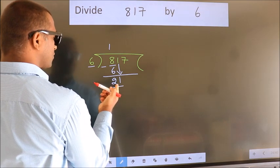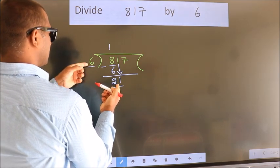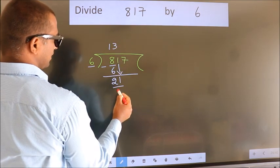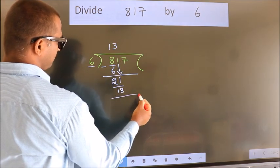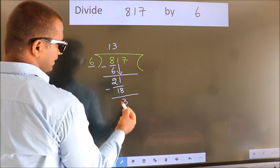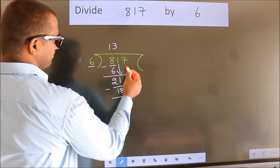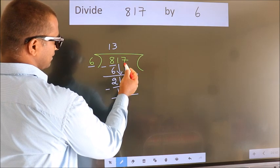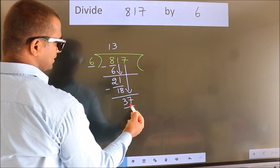A number close to 21 in 6 table is 6 3s 18. Now we subtract. We get 3. After this, bring down the beside number. So 7 down. So 37.